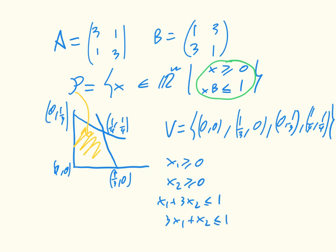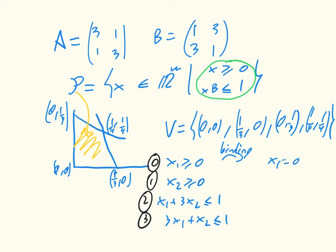What we're going to do is number these labels, starting at 0 — so this has got 0, 1, 2, and 3. All of these inequalities have specific meaning, specifically if they are binding. By binding, we mean if the equality occurs: X1 = 0, X2 = 0, X1 + 3X2 = 1, and 3X1 + X2 = 1. A vertex has a label if it is binding on that particular inequality.